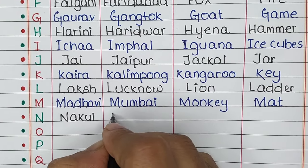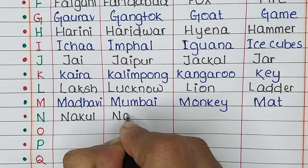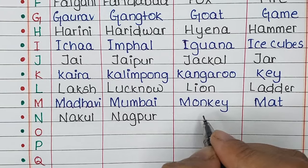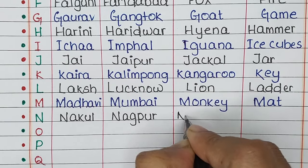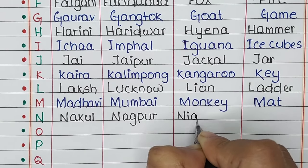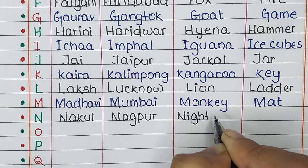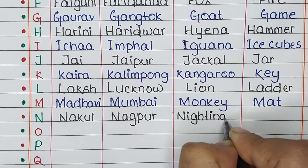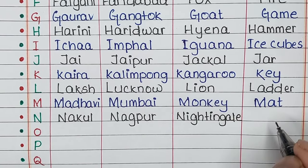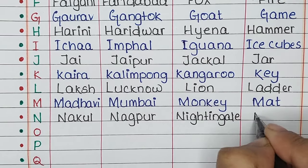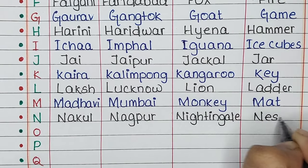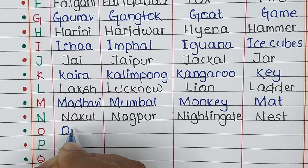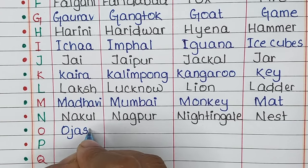Next is letter N. The name is Nakul, the place is Nagpur, the animal is Nightingale, and the thing is Nest.